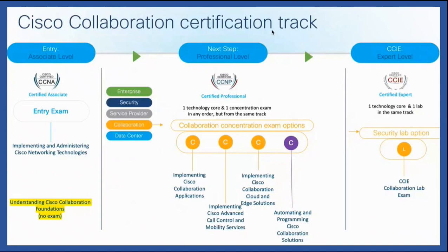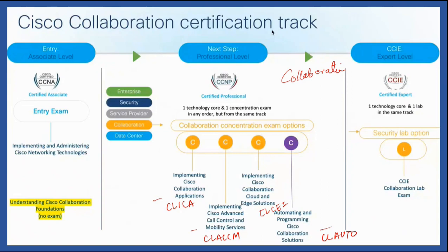This is particularly talking about the collaboration track. We have core and concentration. In concentration, these are the options: CLACCM, CLICA, CLCEI, and CL Auto. CLICA is what you have done already. CLCEI is Collaboration Cloud and Edge. CLACCM is what we are going to do now. And CL Auto is for programming in collaboration — automating and programming Cisco collaboration solutions. If you take any one of these concentration exams and pass it along with the core, you become CCNP certified.